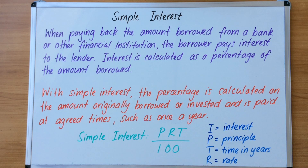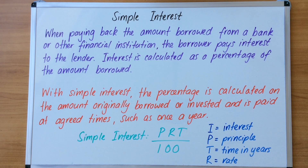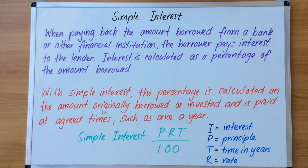With simple interest, the percentage is calculated on the amount originally borrowed or invested and is paid at agreed times, such as once a year. This is the rule for simple interest.